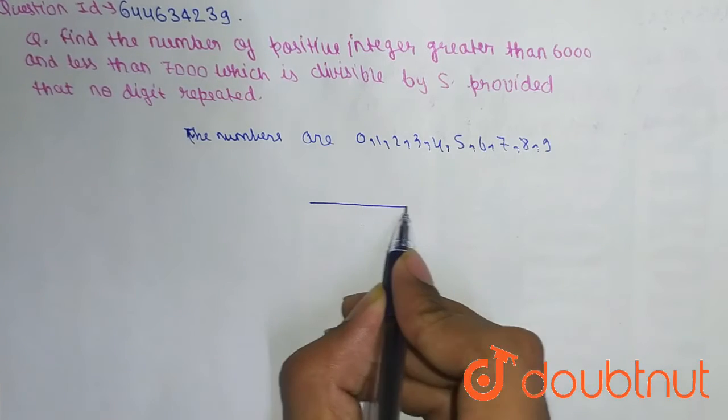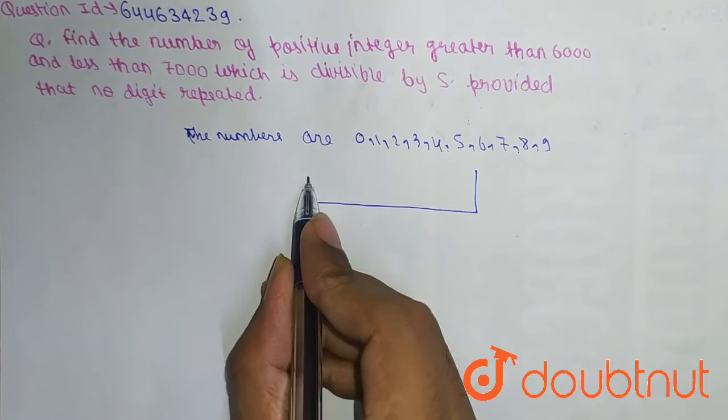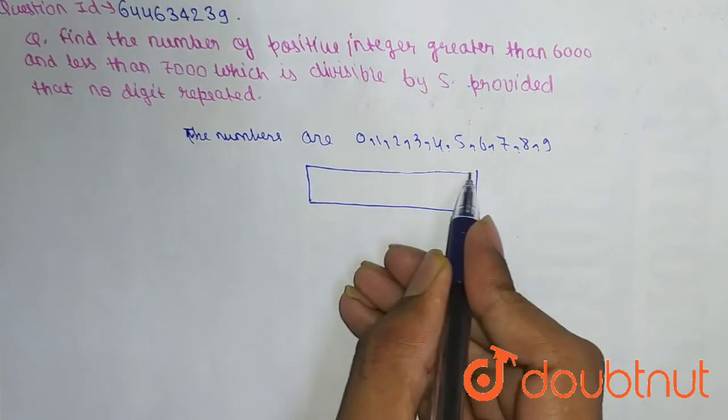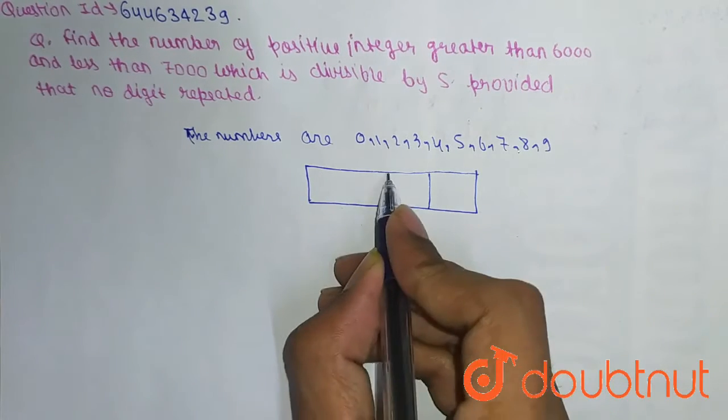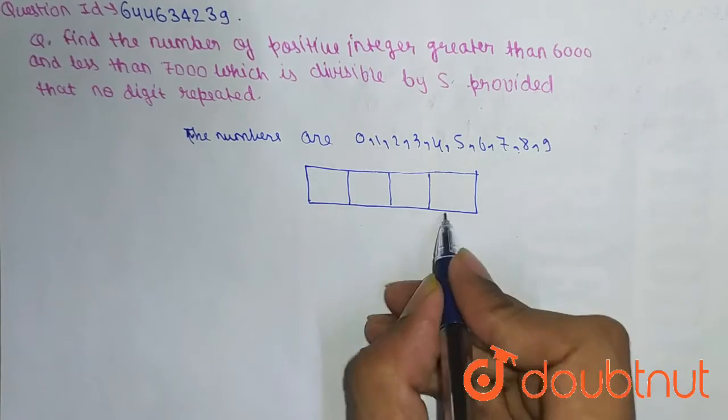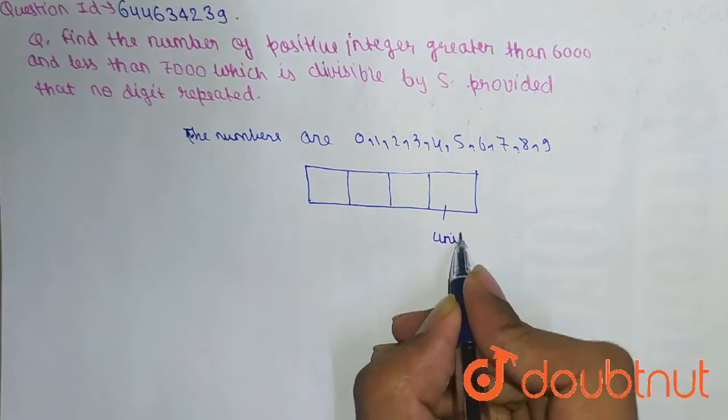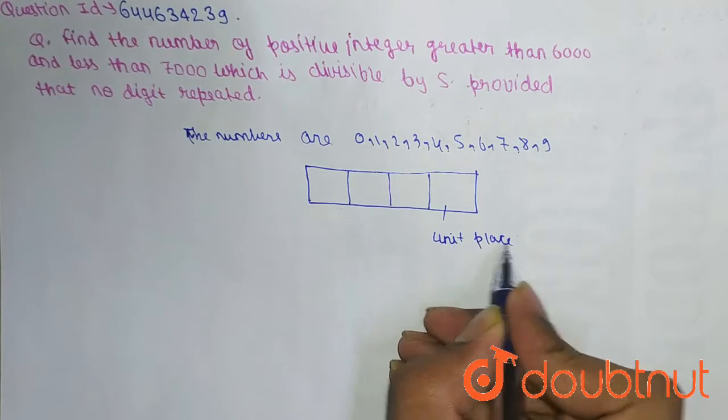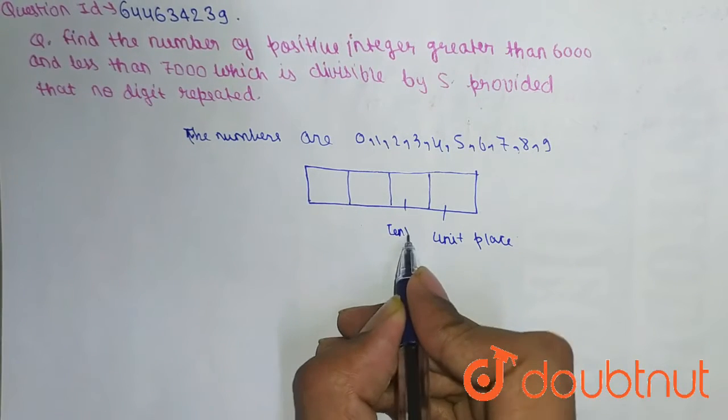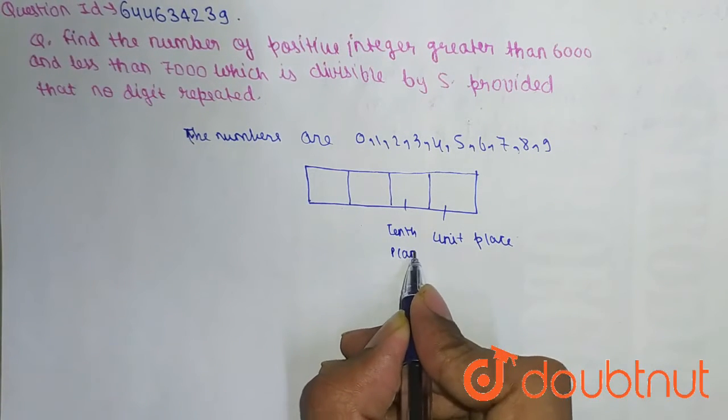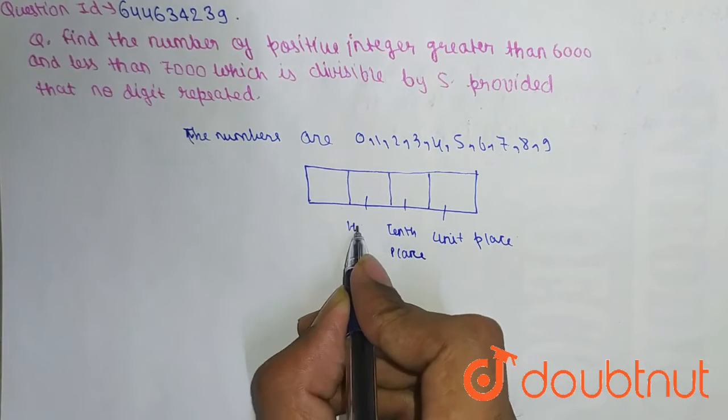So this is our unit place, this is our tenth place, this is our hundredth place, and this is our thousandth place.